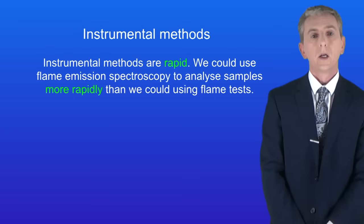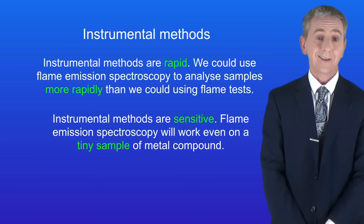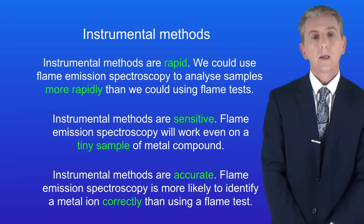Firstly instrumental methods are rapid. For example we could use flame emission spectroscopy to analyse samples more rapidly than we could using flame tests. Secondly instrumental methods are sensitive so flame emission spectroscopy will work even on a tiny sample of metal compound.